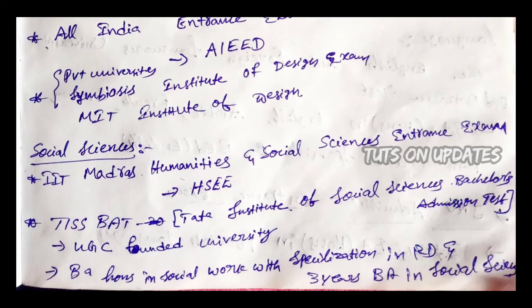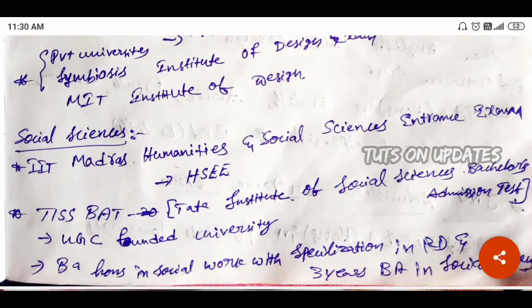Next is Social Sciences. Intermediate MPC candidates, after completing Intermediate, can pursue professional bachelor's degrees in social sciences. The first notable exam is the IIT Madras Humanities and Social Sciences Entrance Examination, known as HSSEE. Another option is the TISS BAT — Tata Institute of Social Sciences Bachelor's Admission Test — for a UGC-funded university offering B.A. honours in Social Work with specialization in Rural Development and B.A. in Social Sciences.